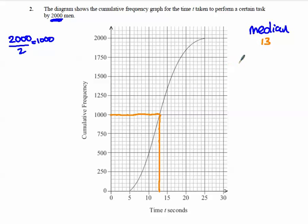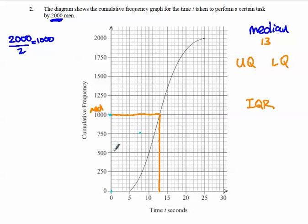Now for the upper and lower quartiles. The median is the halfway point at 1,000. The lower quartile is halfway from zero to the median — that's 500. We go along from 500 and down to read the value, and that's exactly 10. So the lower quartile is 10.